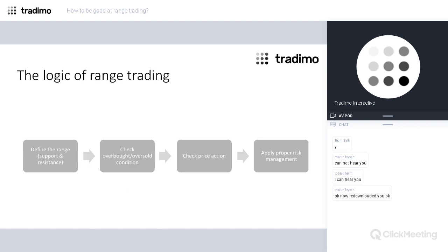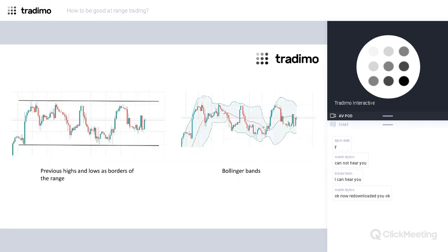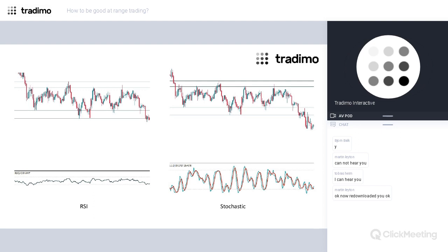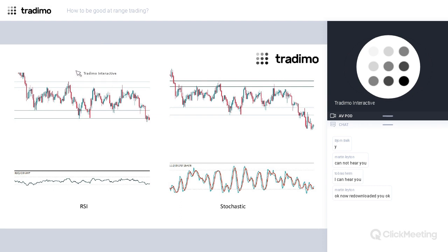Next, we need to check for overbought and oversold conditions of the market. These overbought and oversold conditions are shown by technical indicators — by the so-called oscillators. The purpose is to filter the signals we have in a range. When the price approaches the upper border of the range, we need confirmation that the range is going to continue, and that the market is tired of going to the upside and will be dragged back toward the middle and to the opposite lower border.